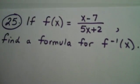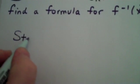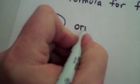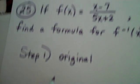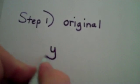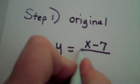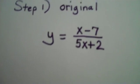Basically, finding a formula for an inverse function is a three-step process. Step one, I've taught my students to write down the original formula containing x and y. So instead of f of x, we're going to write y equals, and then we have x minus 7 over 5x plus 2. That is my original function.